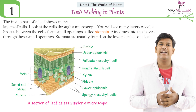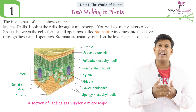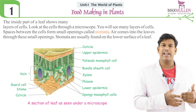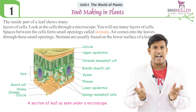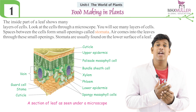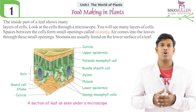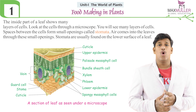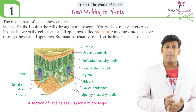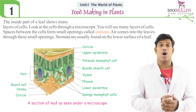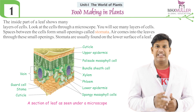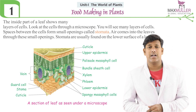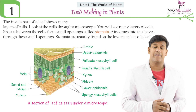Now let us observe the internal structure of the leaf. It consists of several layers from the cuticle to the lower layer of cuticle, which consists of structures known as stomata. These stomata are guarded by guard cells, and through these stomata transpiration takes place. Air also enters into the leaf through these spaces. Stomata are mostly found on the lower surface of the leaf.